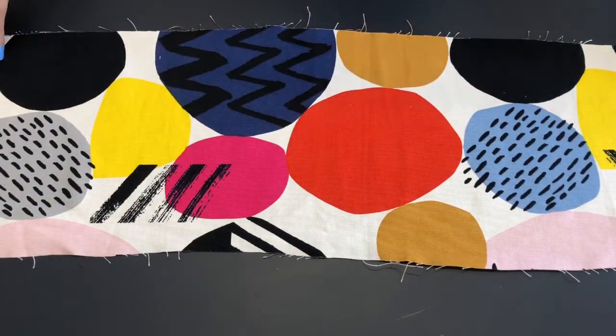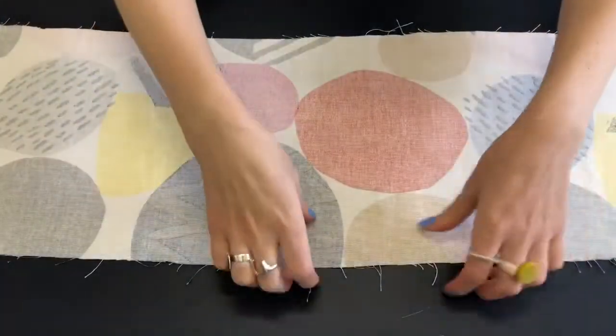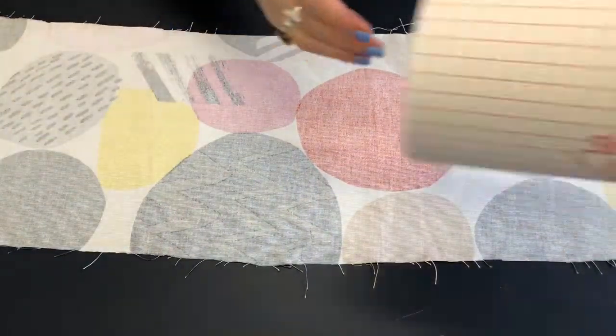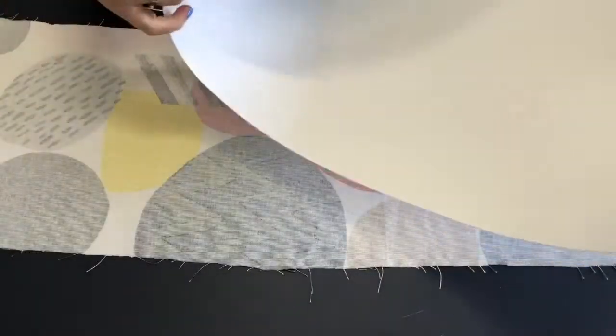So I'm going to start by putting my fabric on the table face down so that my design is on the underside. And then I'm going to take my Stick It plastic.